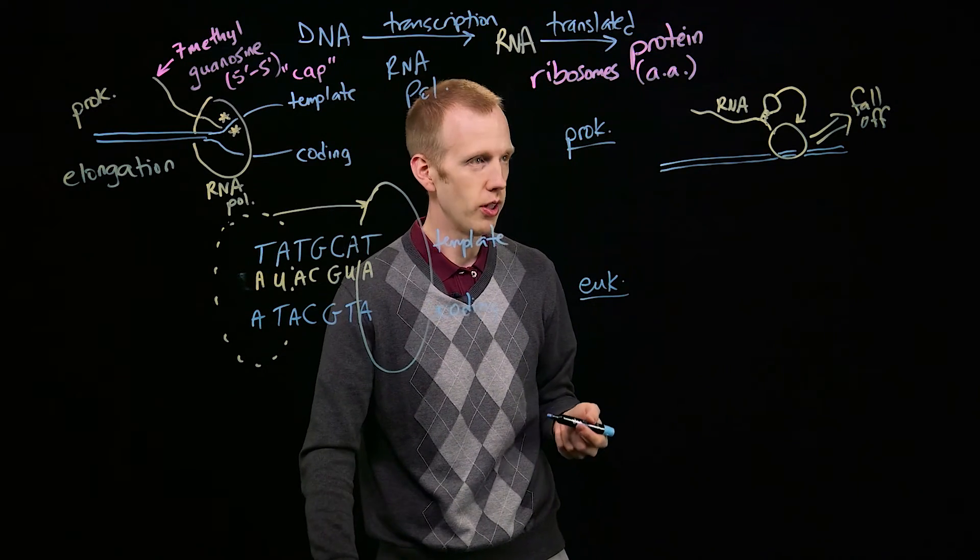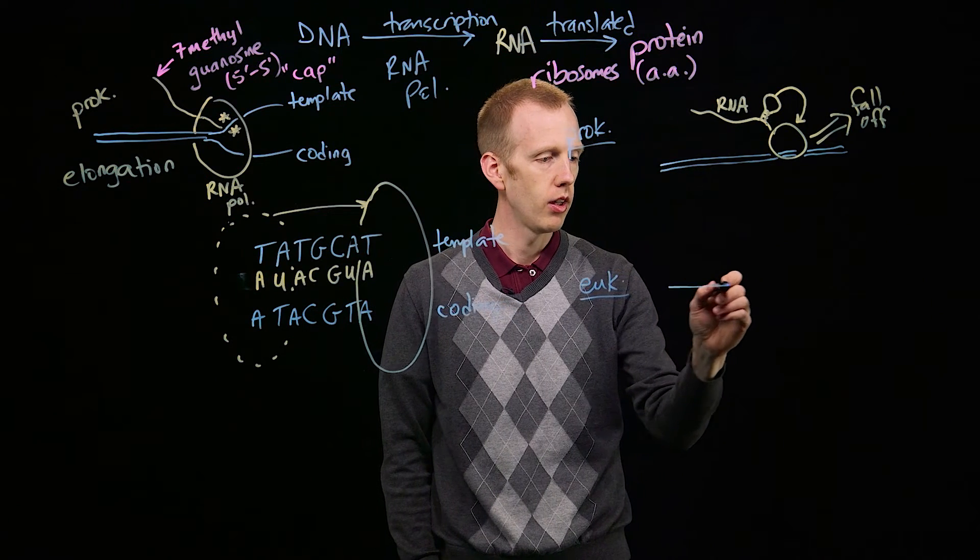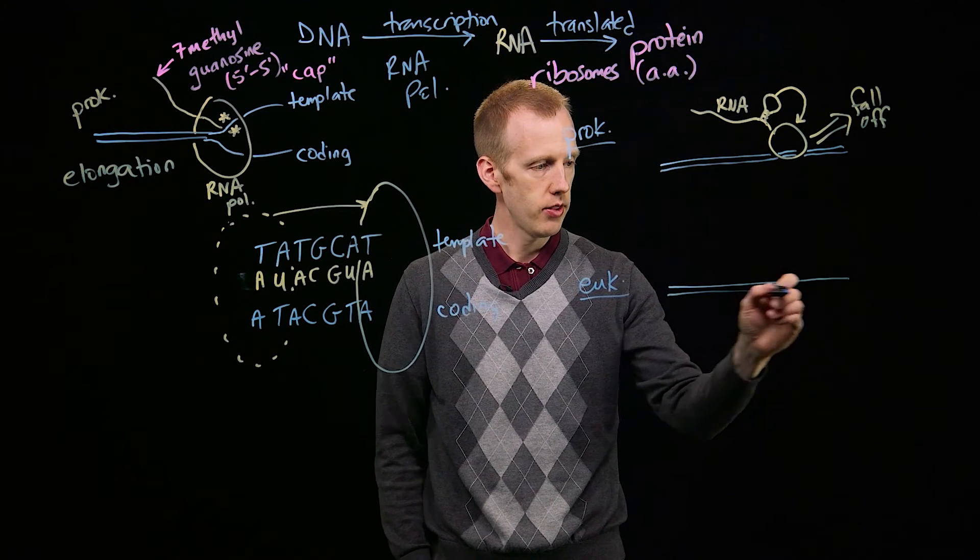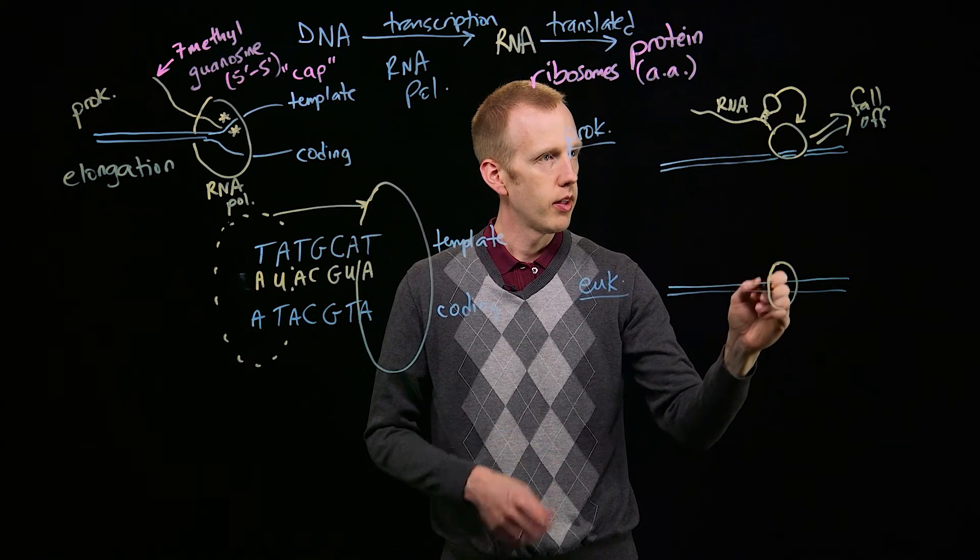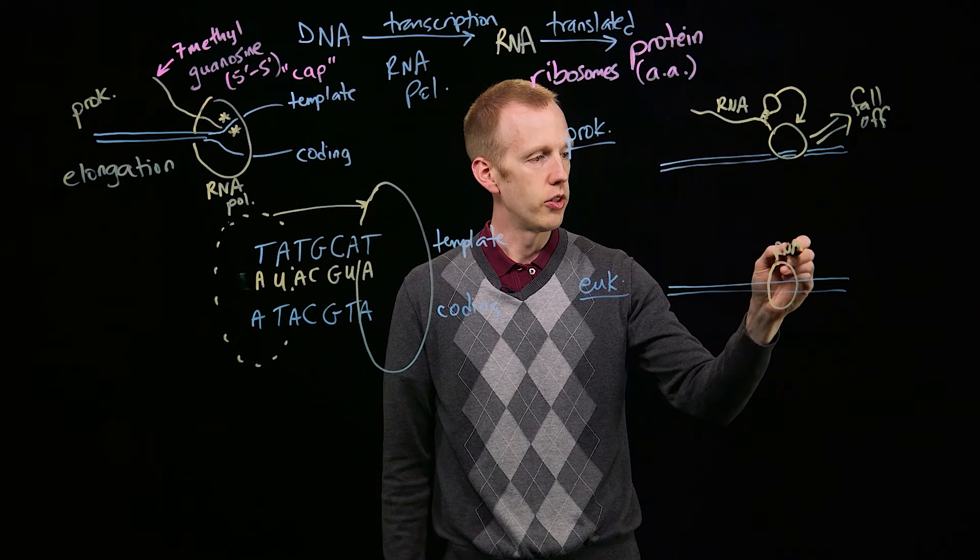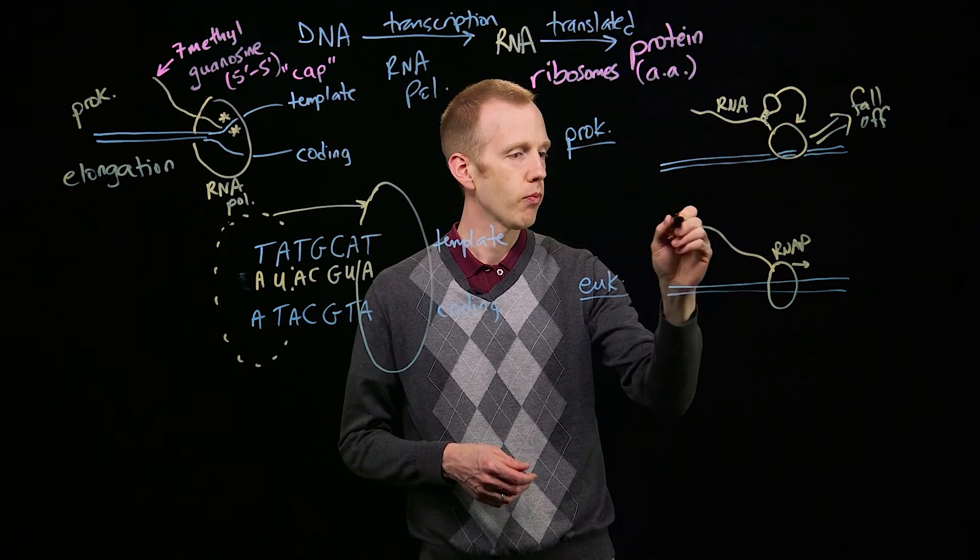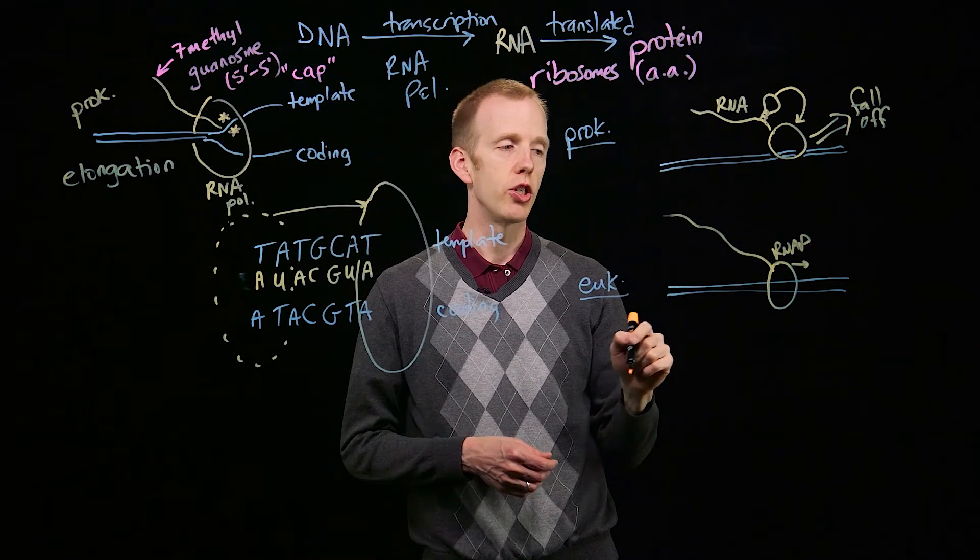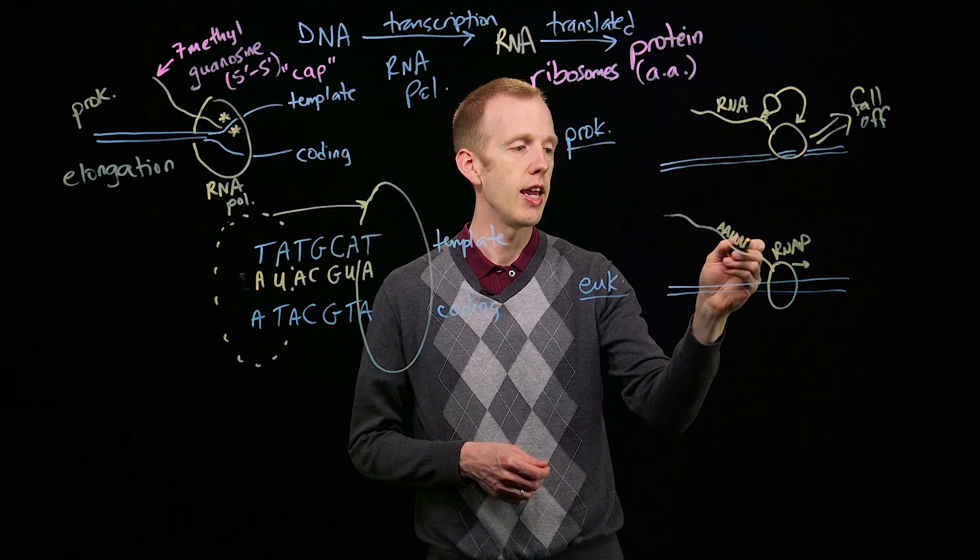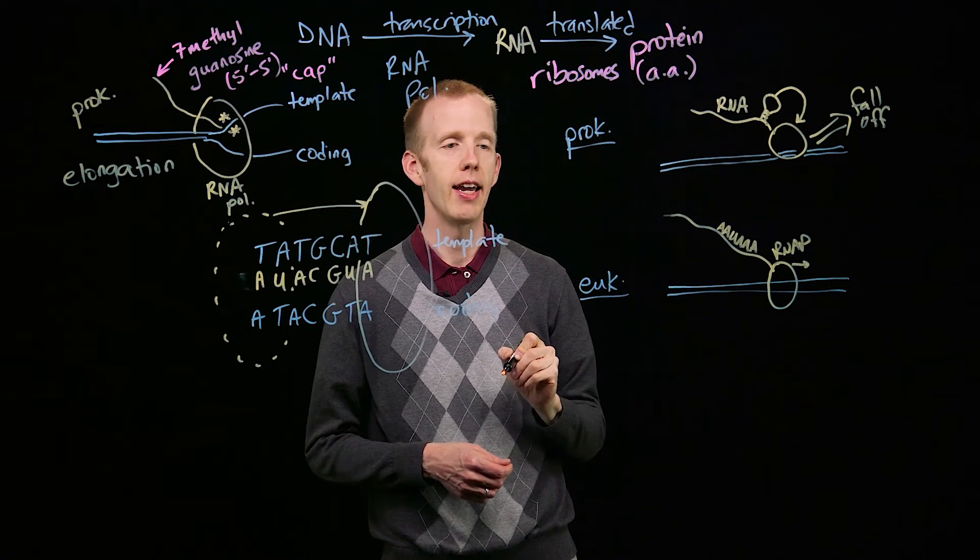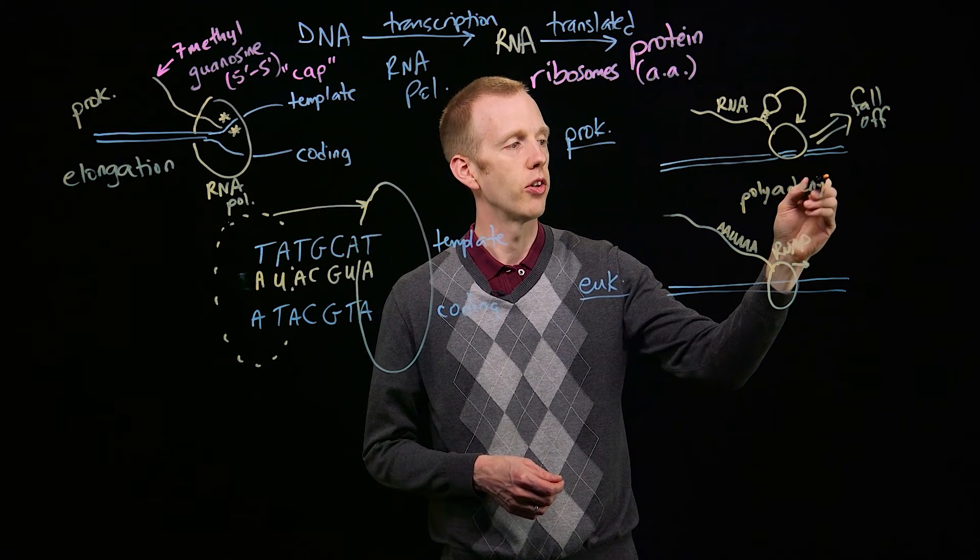Eukaryotes do things a little bit differently in this regard. Transcription termination. In this case, as RNA polymerase is moving down the DNA molecule producing a transcript, there's going to be a section of the gene that encodes a specific sequence in the RNA: AAUAAA. That's the polyadenylation signal sequence.